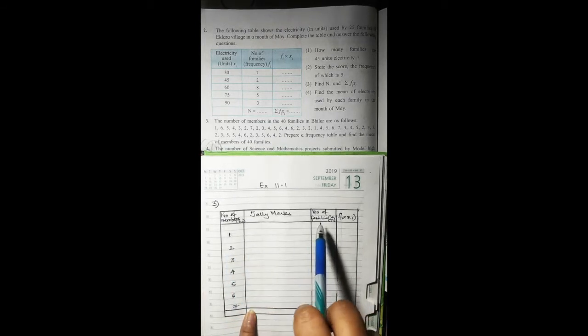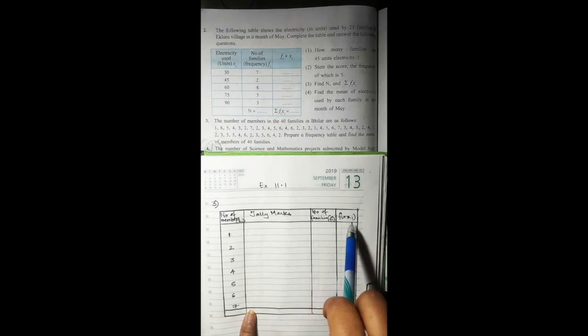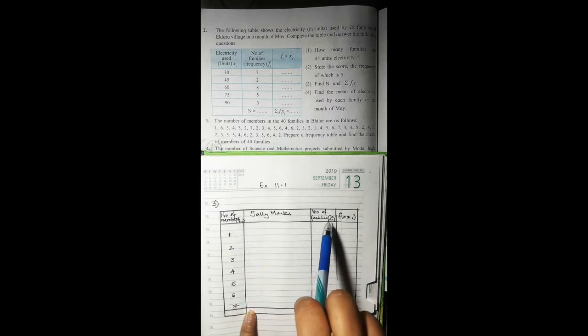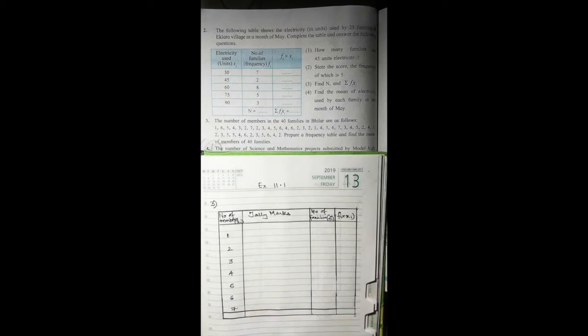So xi is this and fi is this, so you have to multiply this with this. Let's start - four columns are already done.